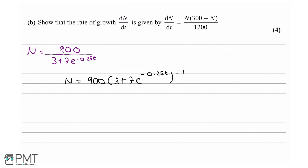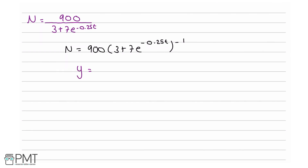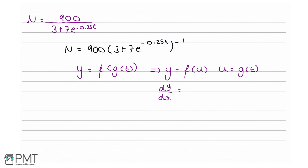The next step is to use the chain rule. For a function y equals f(g(t)), we rewrite y as a function of u, and u as a function of t. Then dy by dt equals the derivative of f(u) times the derivative of g(t), replacing u with g(t) at the end.